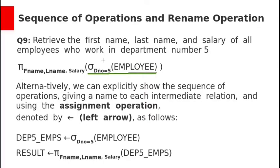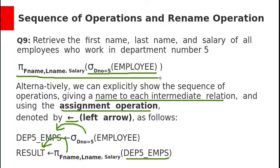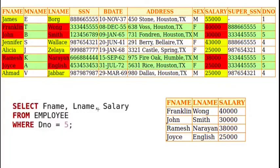Alternatively, we can apply one operator at a time by giving a name to each intermediate relation using the assignment operator. The assignment operator is denoted with a left arrow. First, apply the selection operator sigma with dnum equal to 5 on the employee relation, and give the name 'department5employees' to this resultant relation. Then apply the projection operation on this relation and give the name 'result' to the final relation. The equivalent SQL query is: SELECT fname, lname, salary FROM employee WHERE dnum = 5.